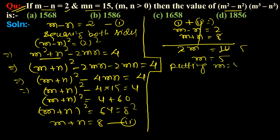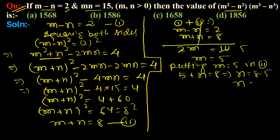So m equals 5. Substituting m equals 5 in the second equation: 5 plus n equals 8, so n equals 8 minus 5, therefore n equals 3.